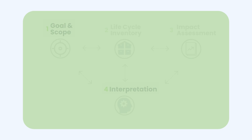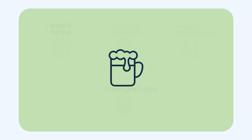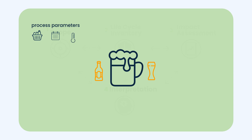For example, imagine a fermentation process during beer production. At the start of the process, it's decided what kind of beer is produced, and therefore also all process parameters — ingredients, fermentation duration, temperature, etc. You could see this as the goal and scope phase in LCA.